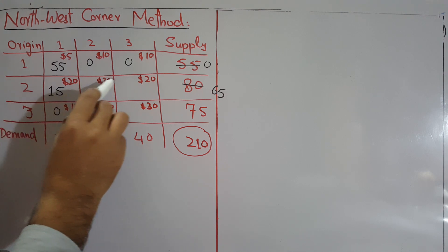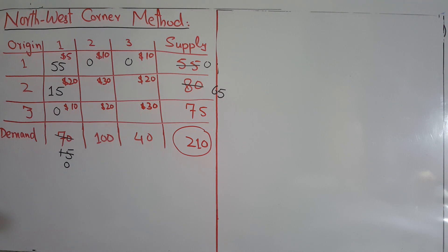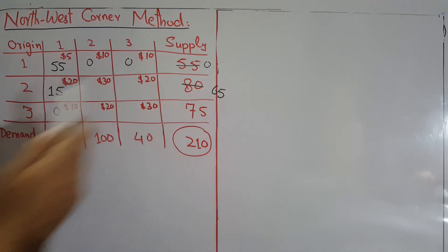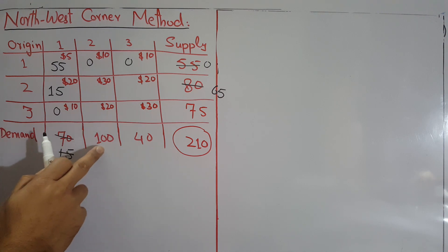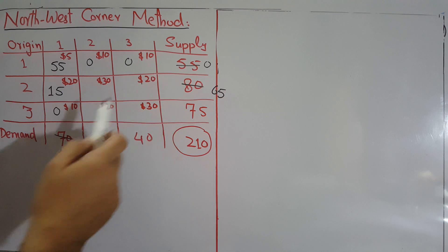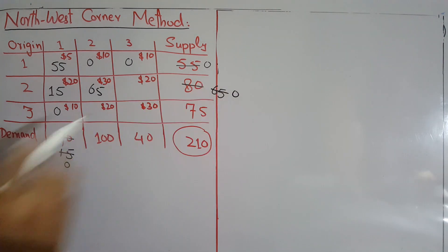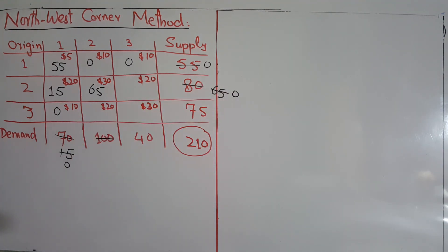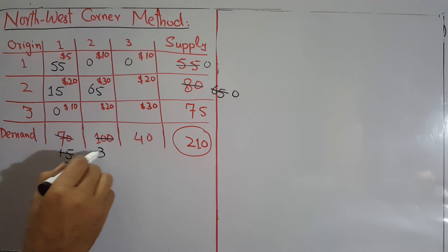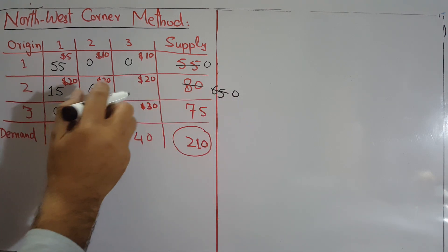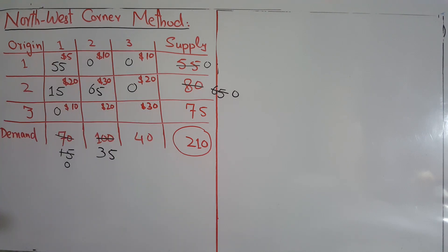Now we are working with the remaining cells, and we choose the upper-left corner again. We have 65 units of supply remaining. We can give all 65 here, but the demand for destination 2 is 100. So we give all 65, leaving nothing in origin 2. The remaining demand for destination 2 is 100 minus 65, which is 35. Since there is no more supply from origin 2, it cannot give anything to destination 3 — so we put zero there.